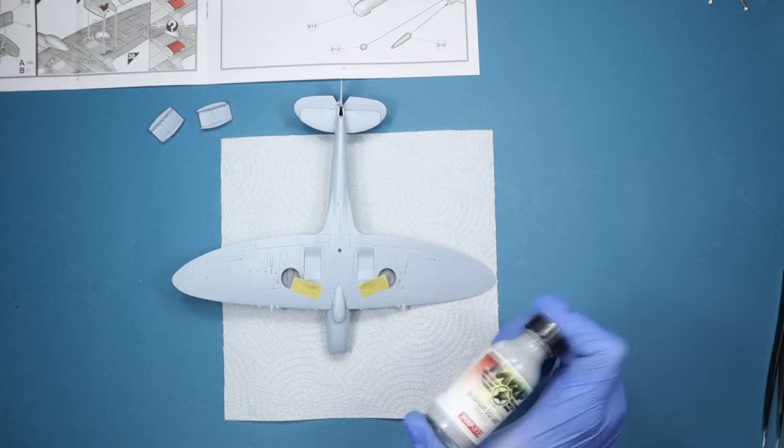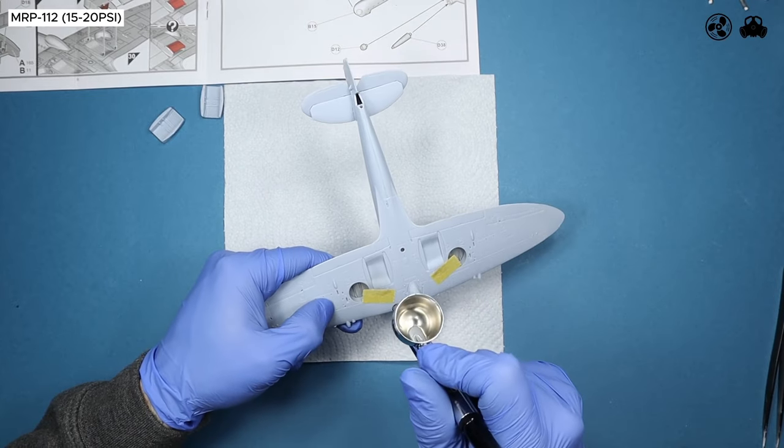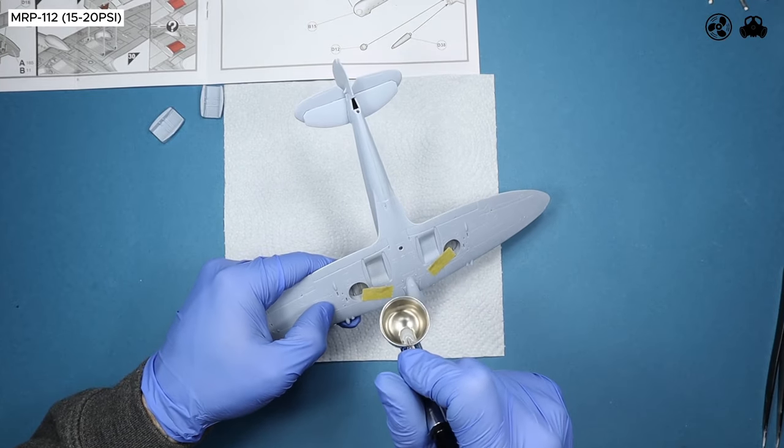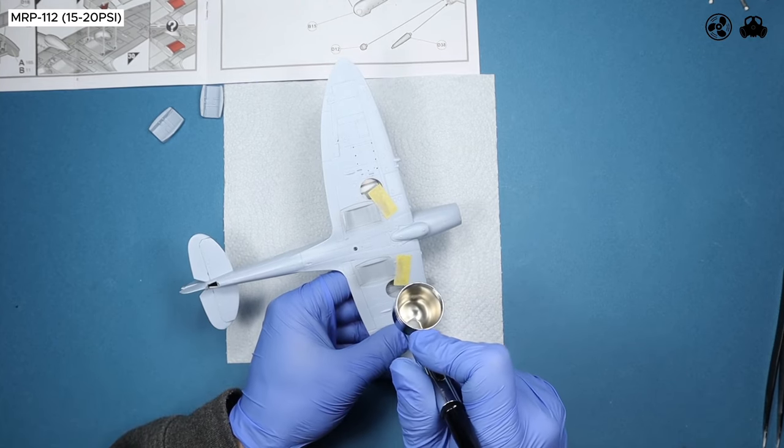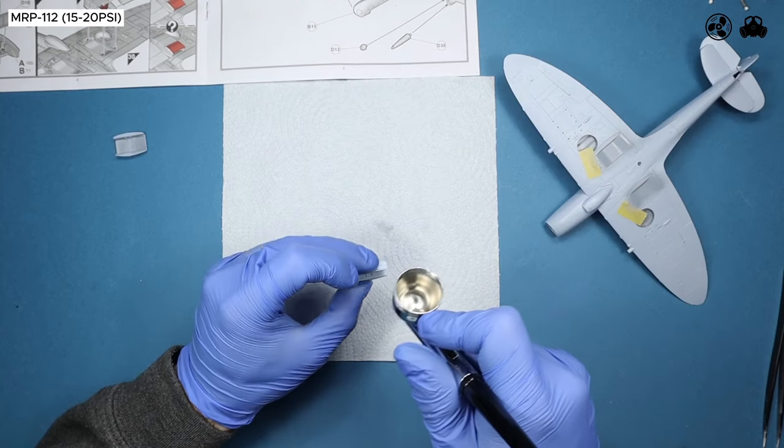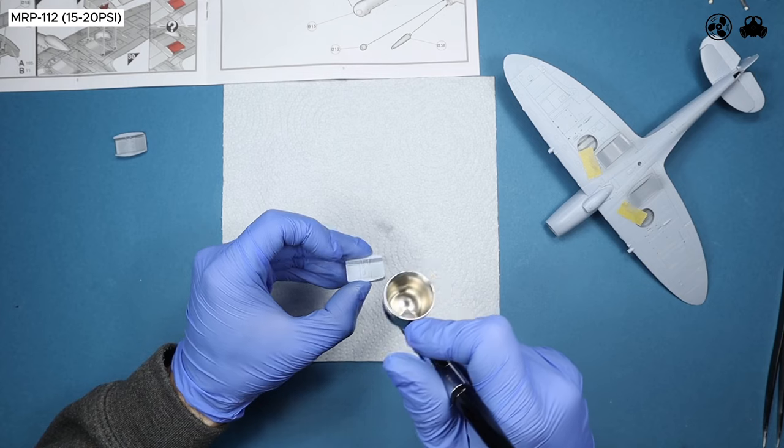Spraying directly onto the plastic, paint both the inside of the intakes and the wings. This won't be very visible at the end, so one coat is plenty.